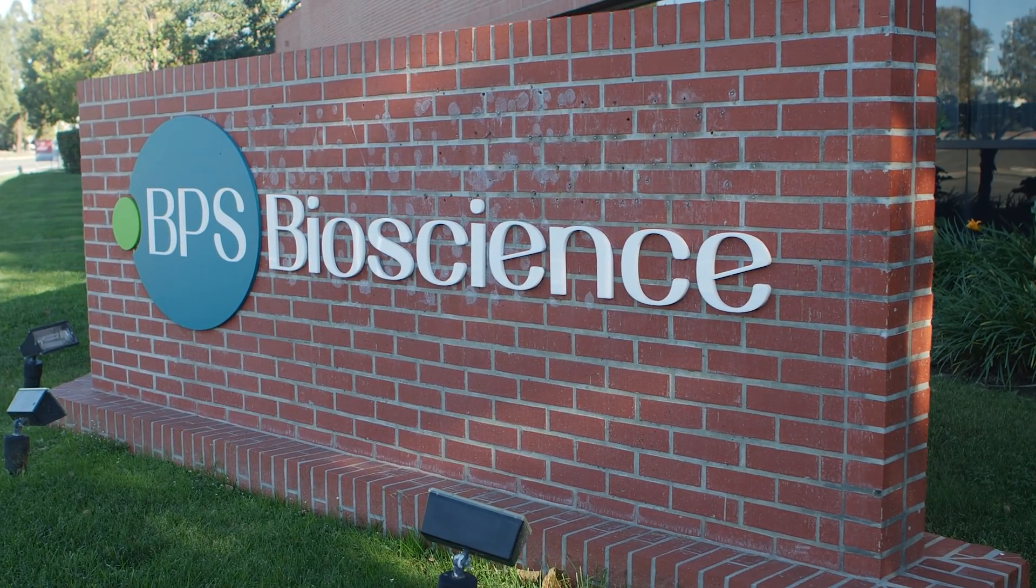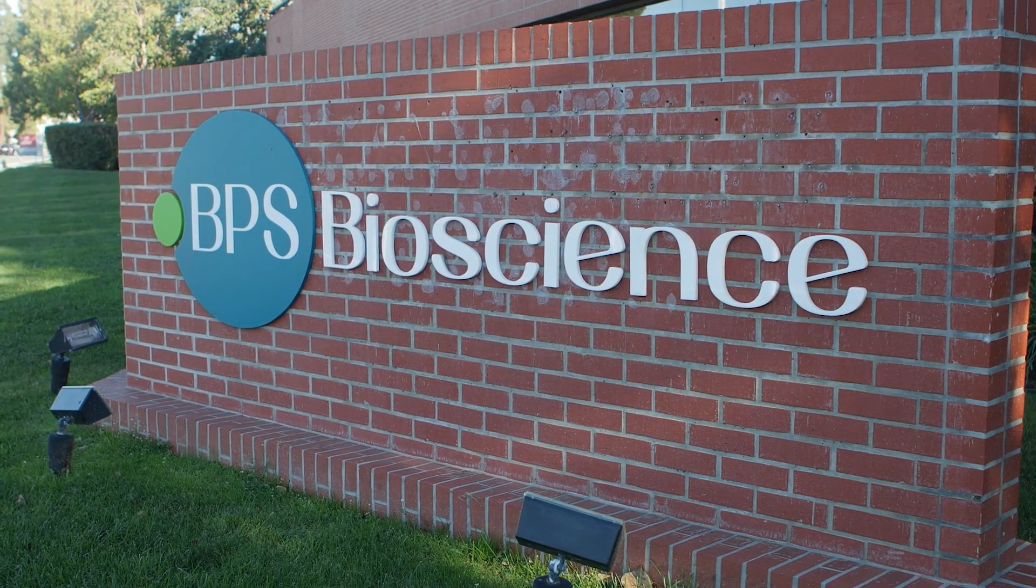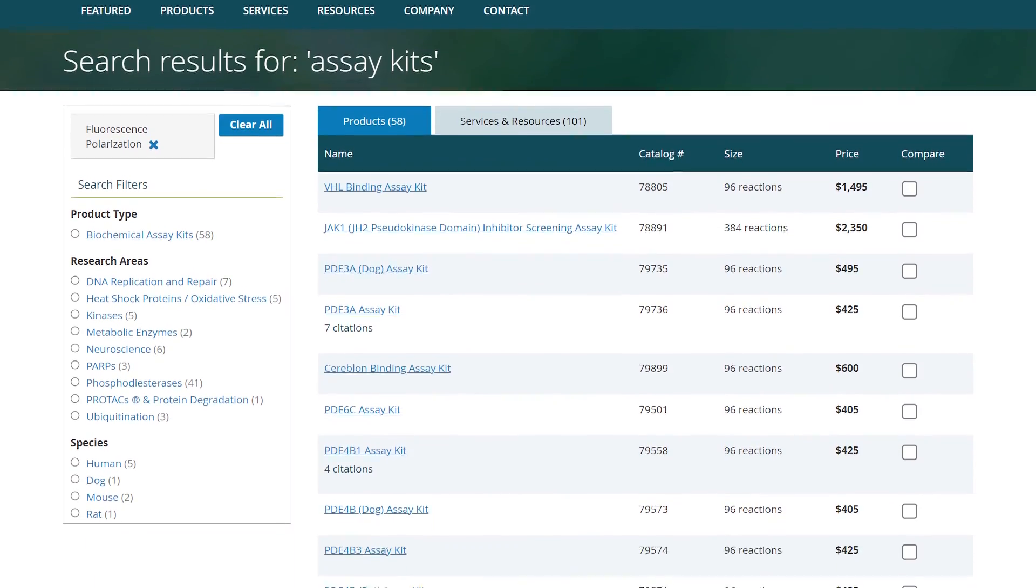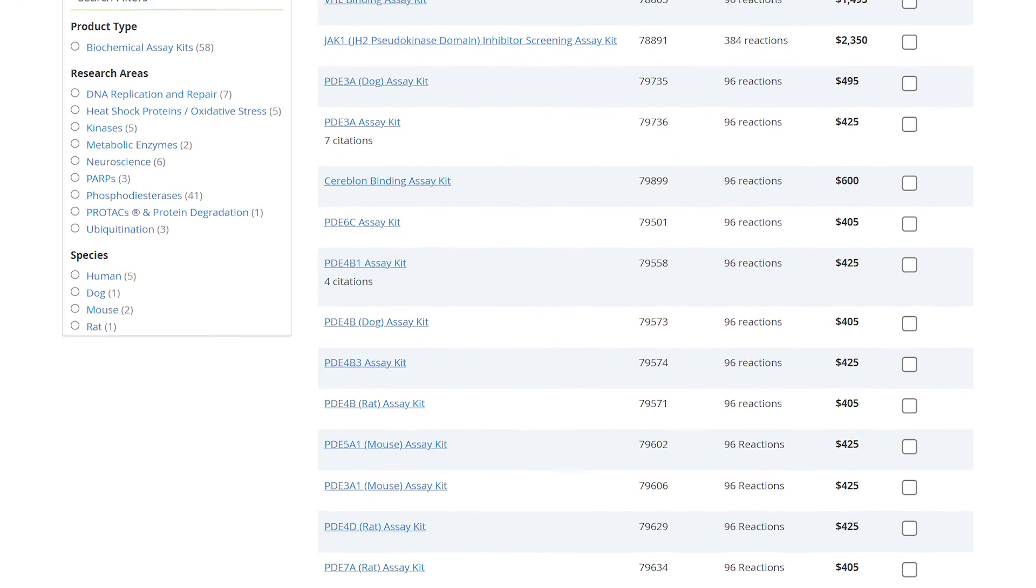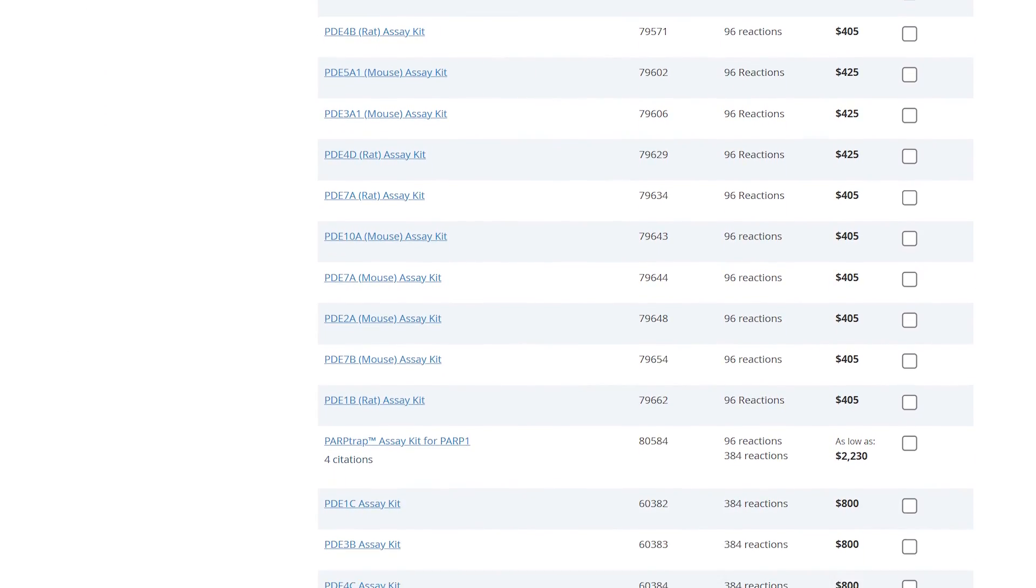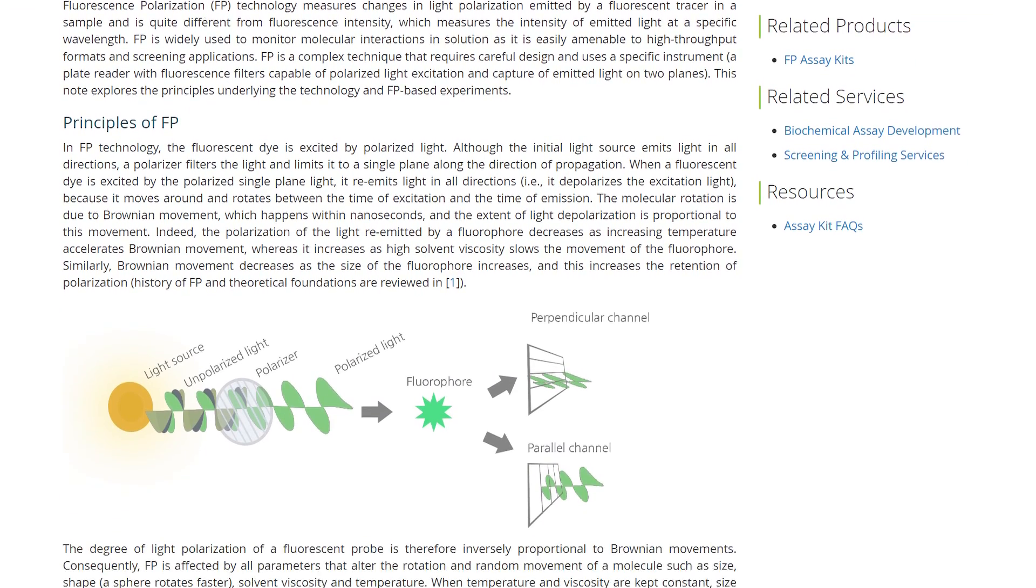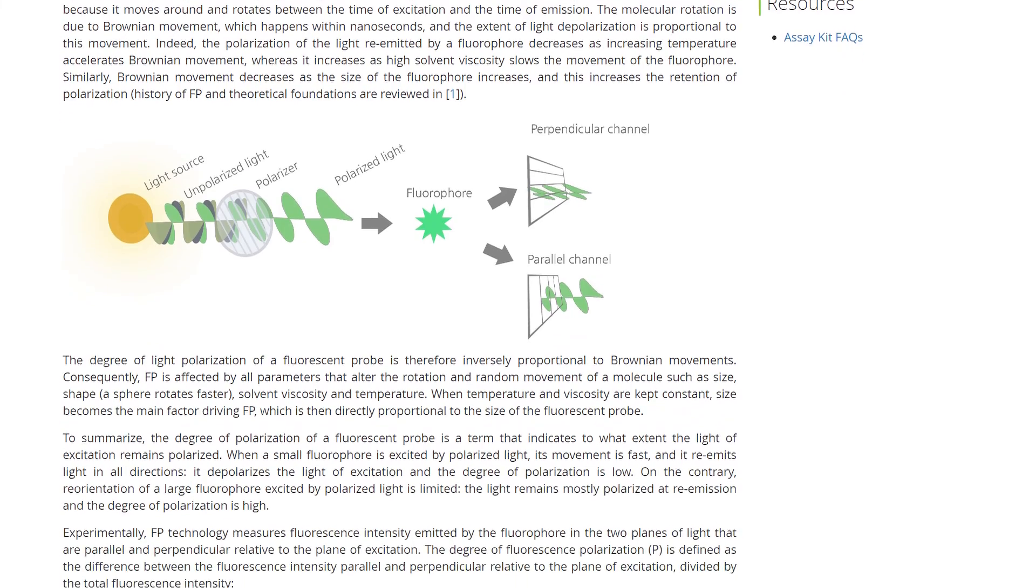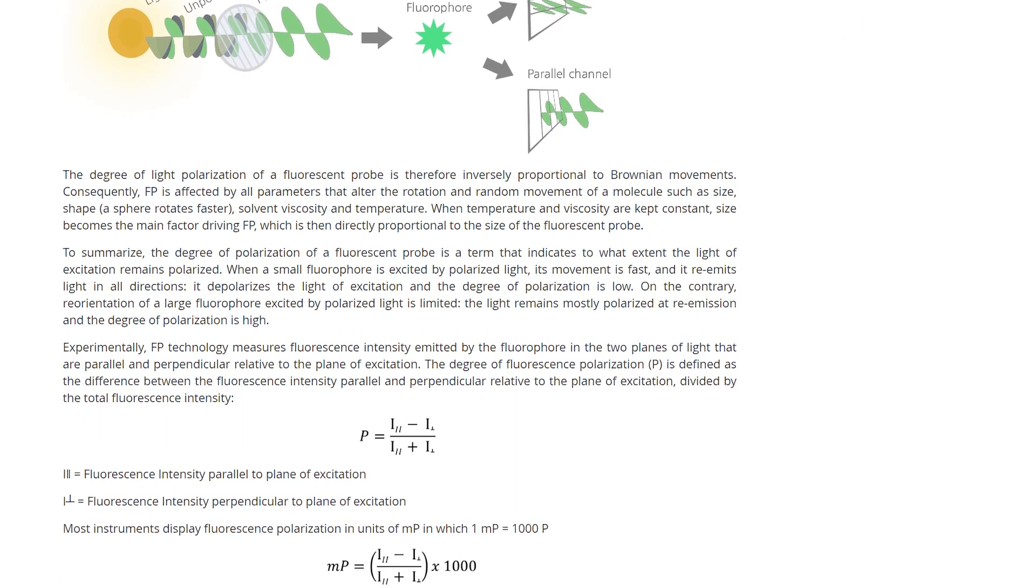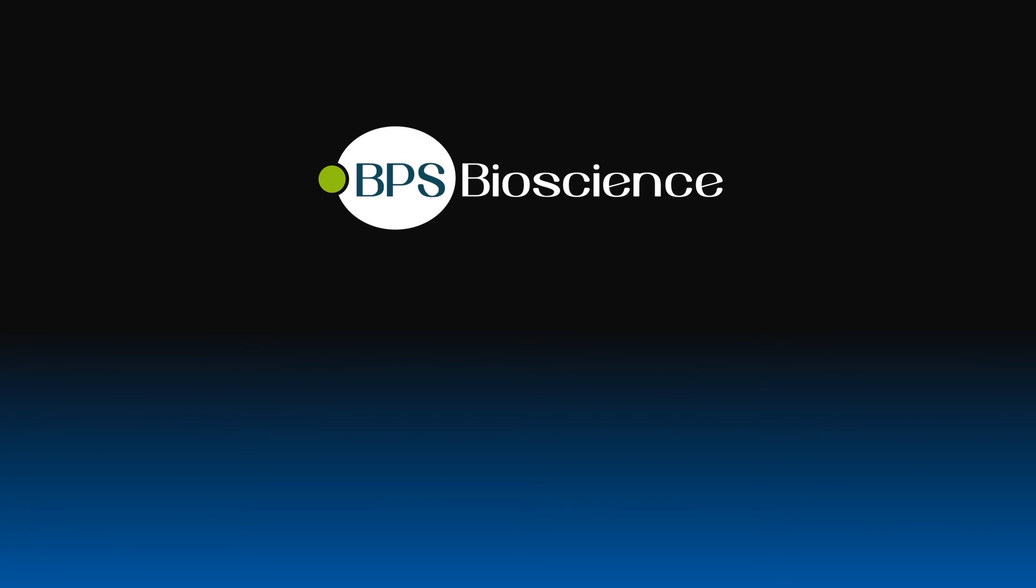BPS Bioscience provides a large selection of simple-to-use fluorescence polarization assays to screen and profile potential inhibitors or activators across a broad selection of targets. We also provide additional resources including a detailed tech note, FAQs, and an e-book to provide guidance and support for FP assays. Find all our products and resources at bpsbioscience.com.